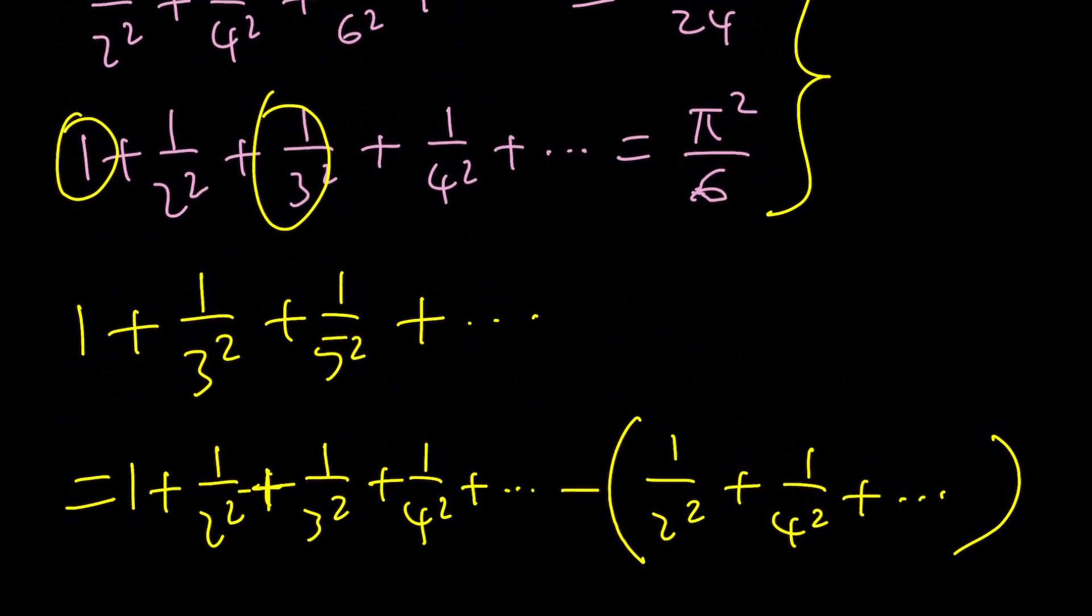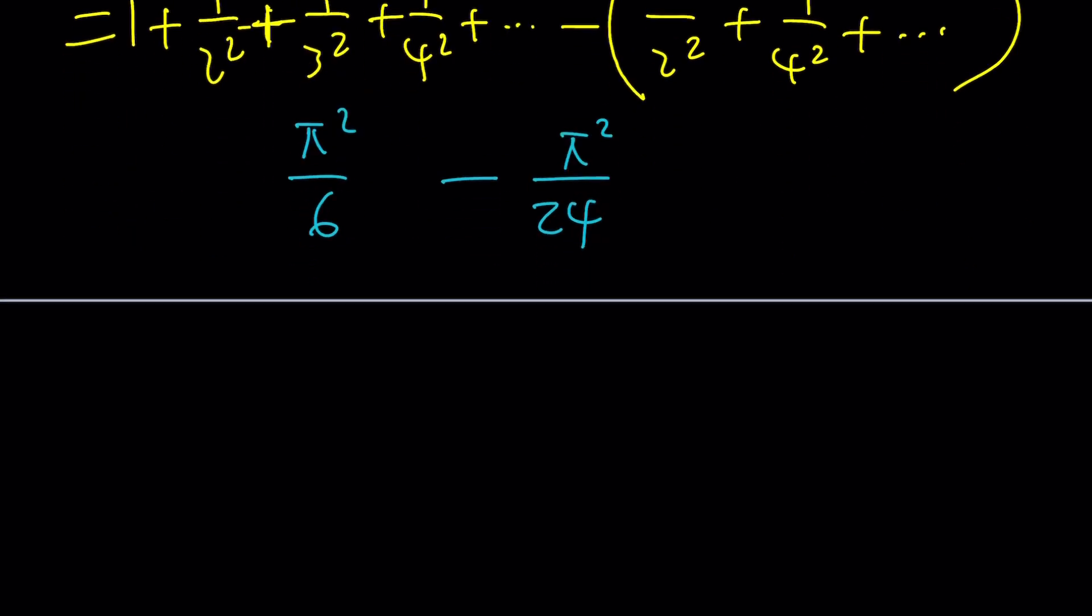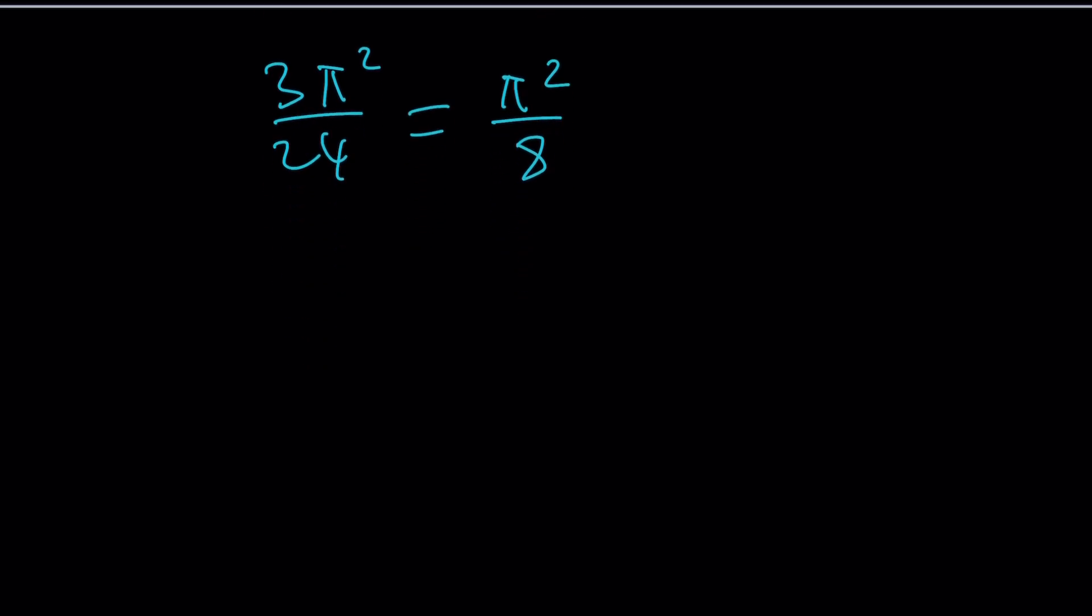From the whole sum, we subtract the evens. From the Basel problem (π²/6), subtract the evens (π²/24). Making a common denominator and multiplying by 4, we get 3π²/24, which simplifies to π²/8.